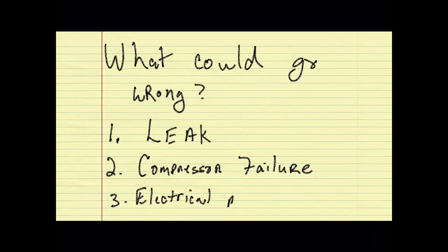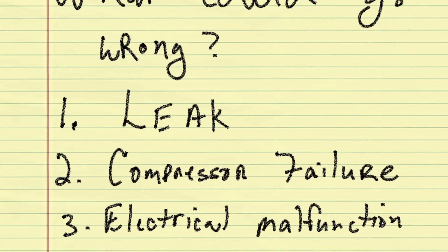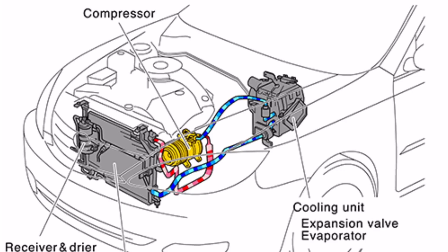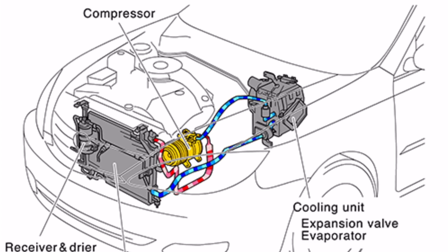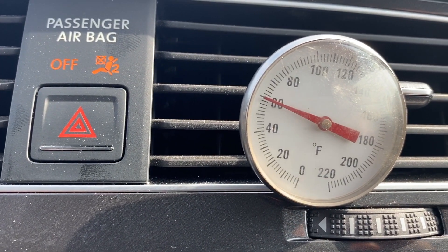When we can't find a leak and the compressor and clutch are good, we usually assume there's an electrical malfunction. There are other things that can cause problems, like expansion valves that have failed or a restriction in the system, but those three are the most common.